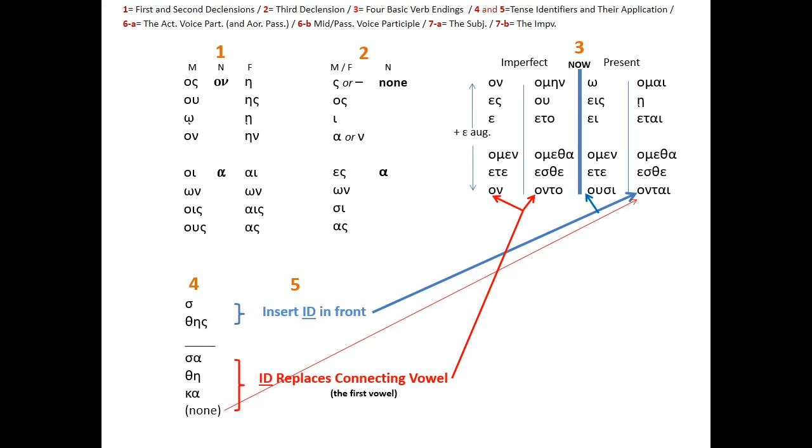Minimum five can be stated in two sentences. One, insert the future tense identifiers in front of the present tense endings. And you can see that with the blue line going up toward columns three and four. Number two, replace the connecting vowel. That's going to be the first vowel of the ending, always an omicron or an epsilon. Of the imperfect tense endings, the two forms, two columns left of the bold blue line, with the tense identifiers, the tense identifiers that are below the line, below the future tense identifiers.